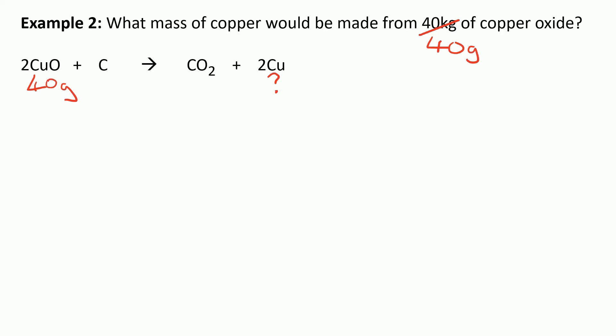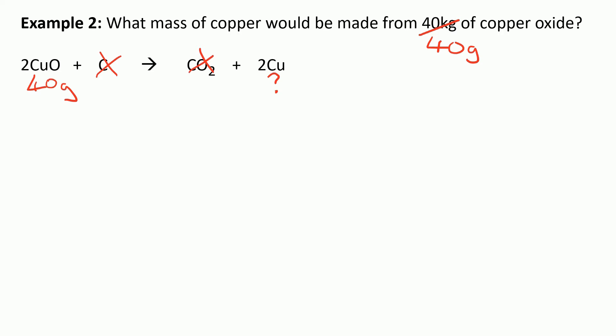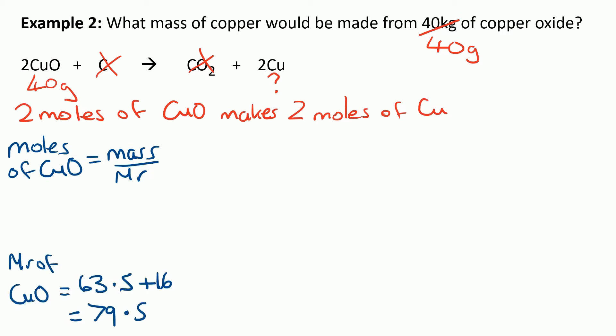We can ignore the other formula in the equation. We write a sentence: in this case 2 moles of CuO, because we've got a big 2 in front of it, makes 2 moles of Cu. But it's still an equal ratio, so if we had 10 moles of CuO it would make 10 moles of Cu. Moles equals mass over MR, and the MR of CuO is copper plus oxygen, which comes to 79.5. So that's 40 over 79.5, which is 0.503 moles.